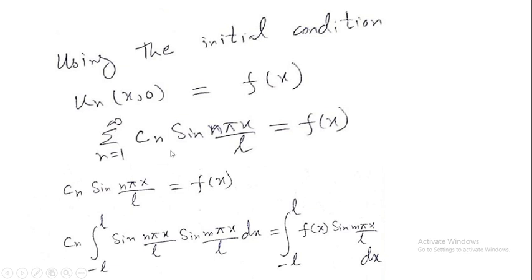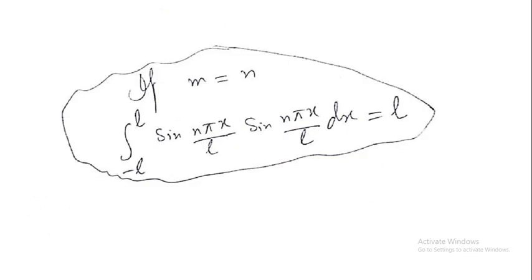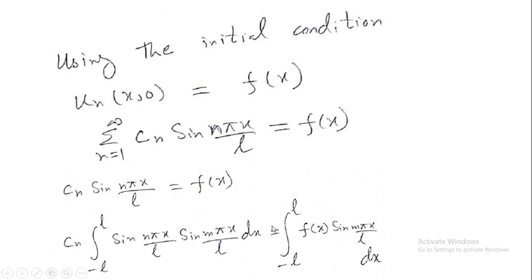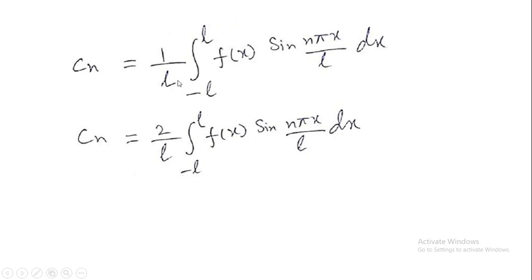Using the initial condition u(x,0) = f(x), substituting t = 0 gives Σ(n=1 to ∞) cₙ·sin(nπx/L) = f(x). Multiplying both sides by sin(mπx/L) and integrating from −L to L, using the orthogonality property (the integral equals L when m = n, and 0 otherwise), gives: cₙ = (1/L)·∫₋ₗᴸ f(x)·sin(nπx/L) dx.